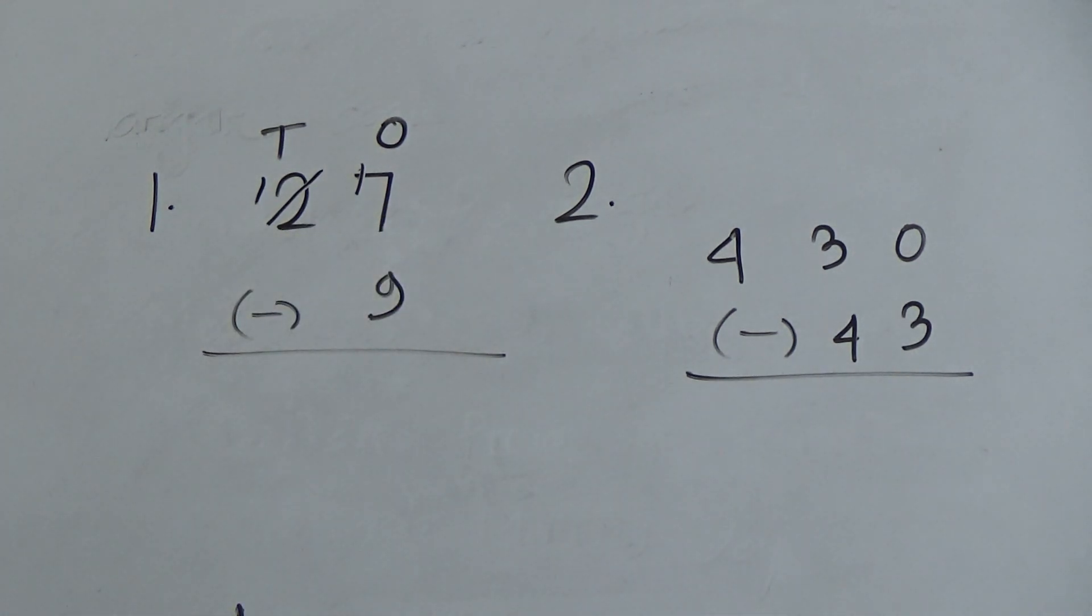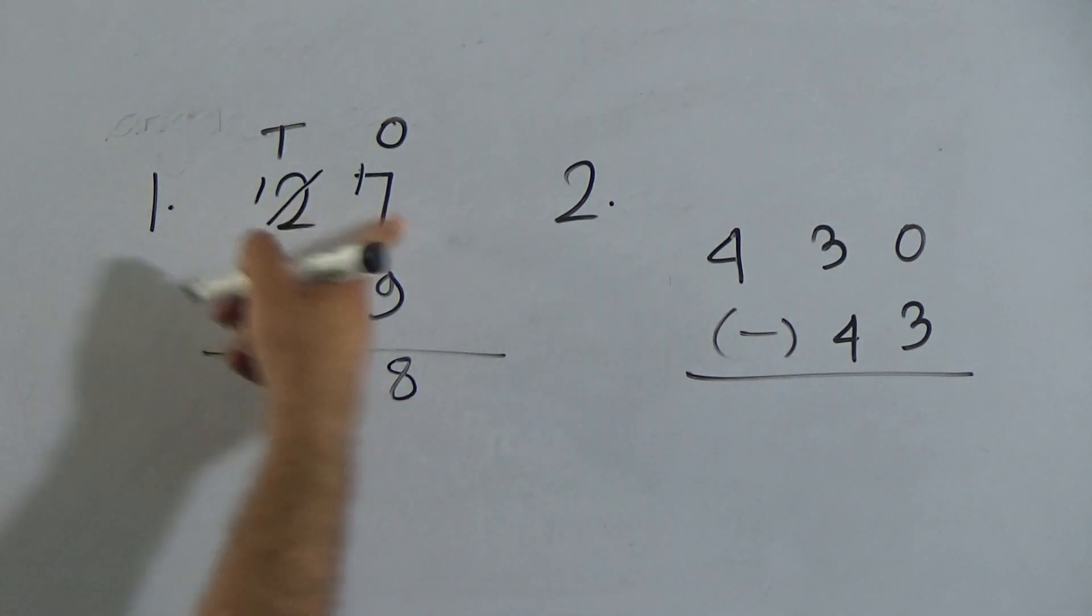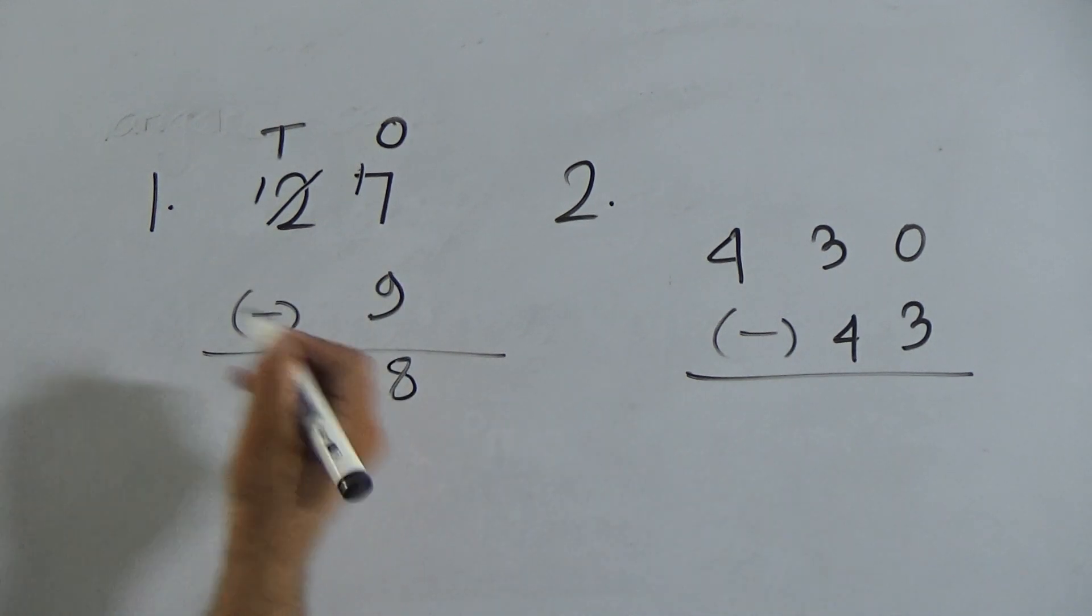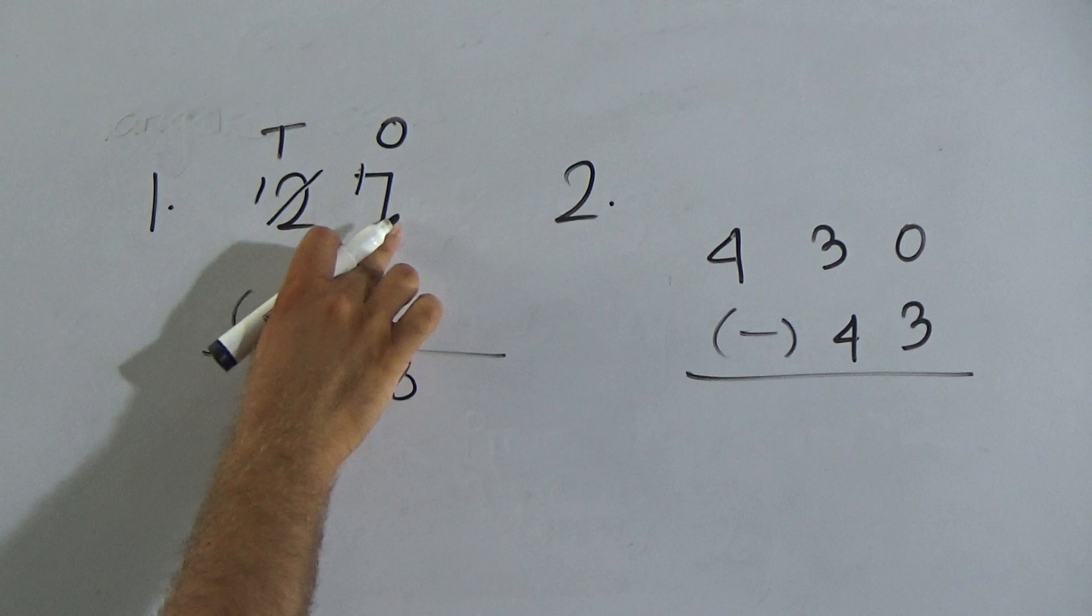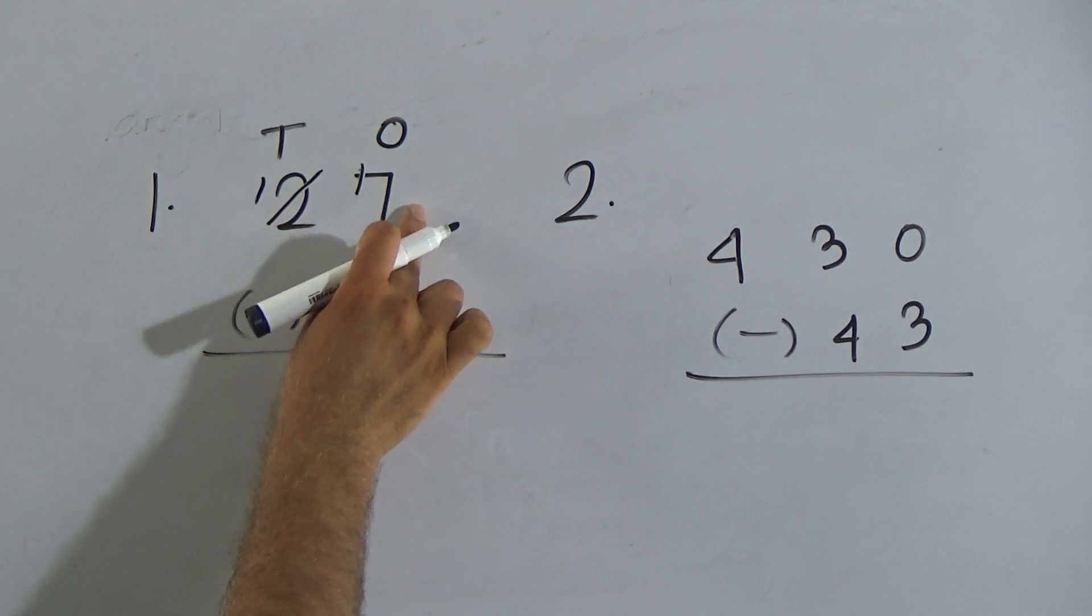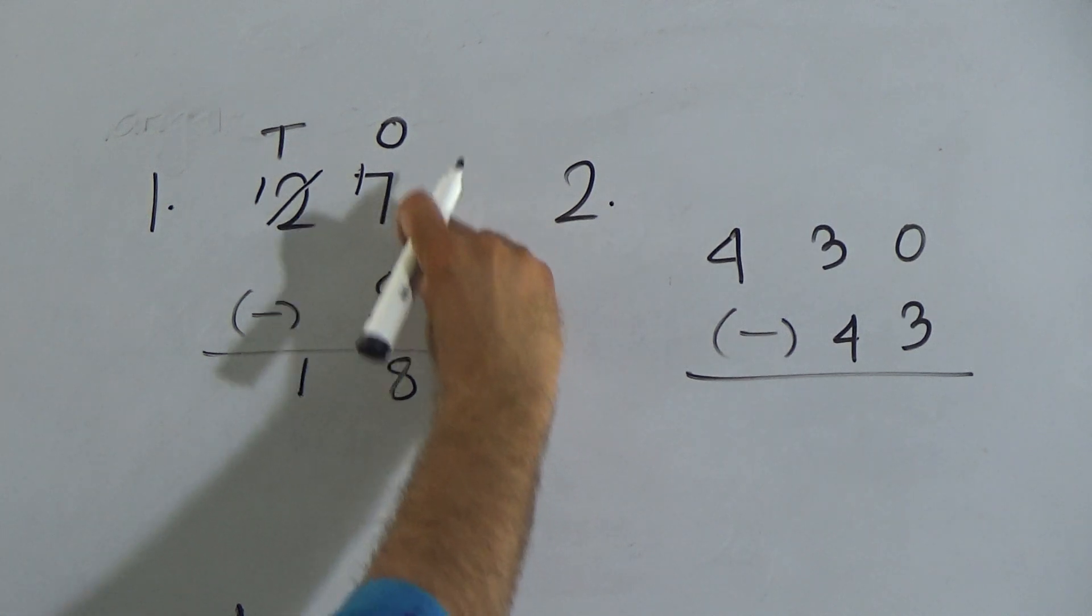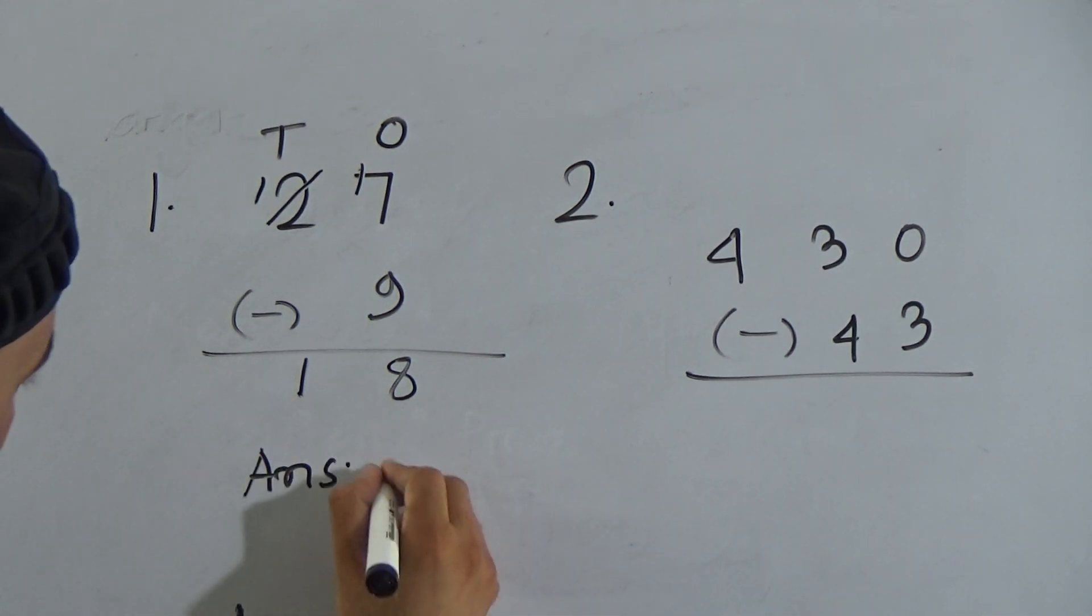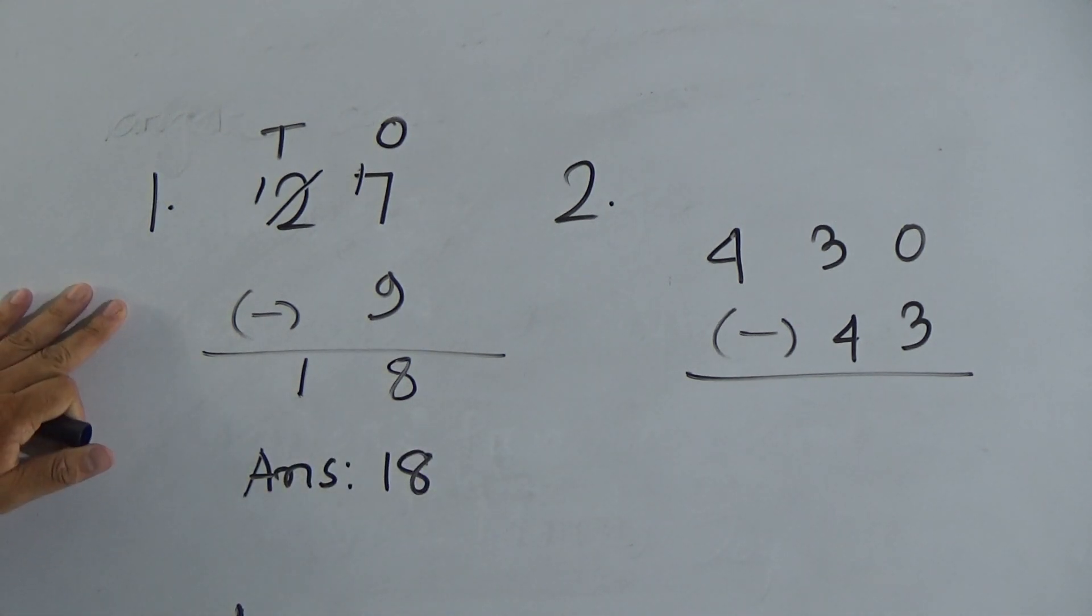9 from 17: 10, 11, 12, 13, 14, 15, 16, 17, so it will be 8. And 1 from 1 is 0, we write 1. Let me repeat: 7 is smaller than 9, so I borrowed 1 from the 10's column, making it 17. Now subtract 9 from 17: 10, 11, 12, 13, 14, 15, 16, 17, which gives us 8. The remaining 1 goes here, so the answer is 18. Hope you understood.